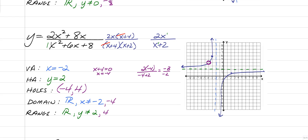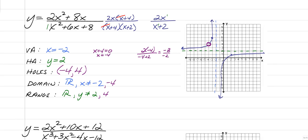The vertical and horizontal asymptotes have not changed from the last video, and how you graph it hasn't changed either — you're allowed to use your graphing calculator. The only thing to remember is: whatever cancels, set that equal to 0 to find the x-coordinate of your hole. Plug that into the simplified equation to get the y-coordinate of your hole. Make sure you list those values as options not available in your domain and range.